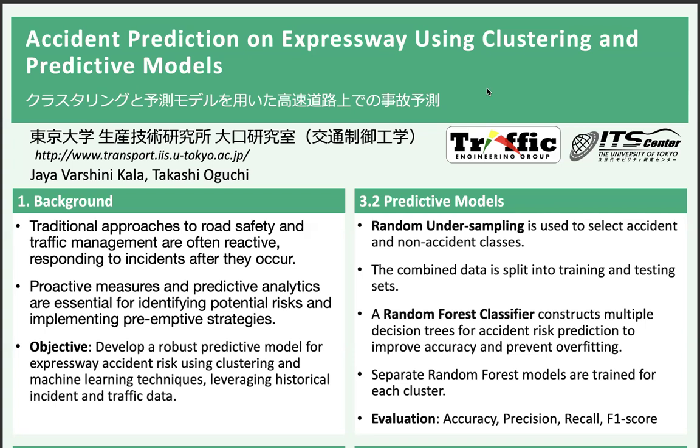Coming to the background, traditional approaches to road safety and traffic management are often reactive, addressing incidents only after they occur. This approach can lead to higher accident rates and increased traffic congestion. To tackle this issue, we aim to develop a robust predictive model for expressway accident risk by leveraging historical incident and traffic data, using clustering and machine learning techniques to predict potential risk before accidents occur.